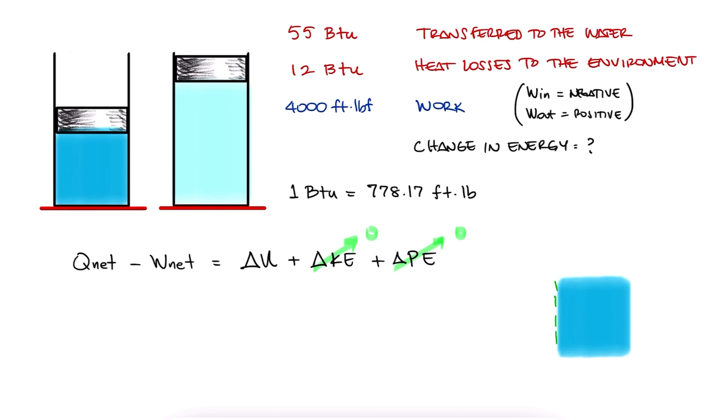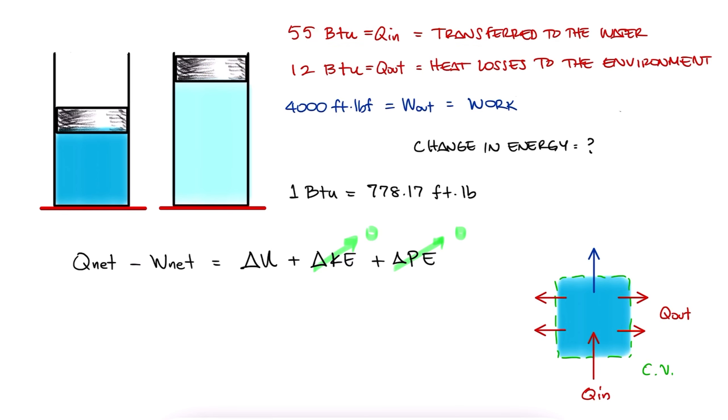Specifically here, we can choose the control volume to be the water volume or the volume bounded by the piston and the cylinder walls. We have heat coming in, heat coming out, and work coming out of the system.